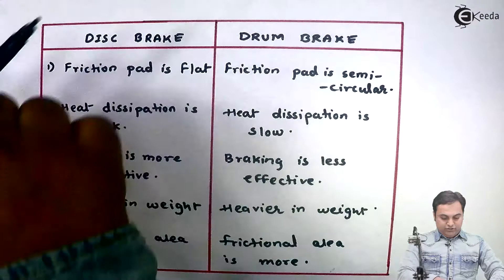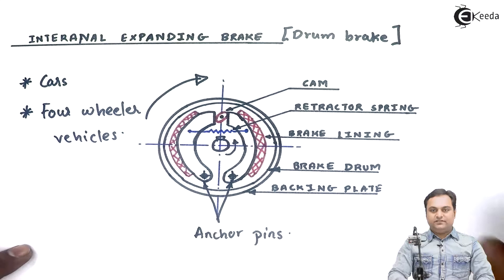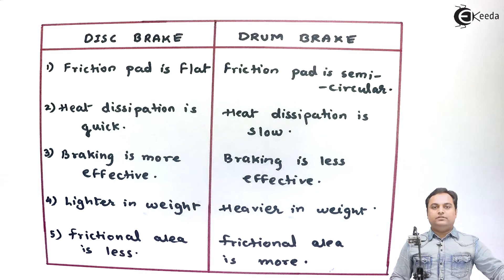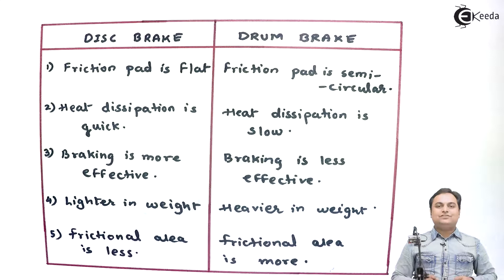Here I can show you the diagram — this internal expanding brake is the drum brake. As we can see, in case of drum brake the friction surface or friction pad is semi-circular, but in case of disc brake the surface is flat.